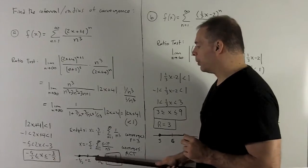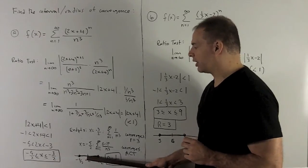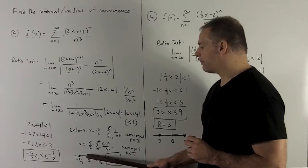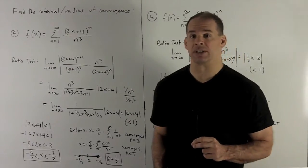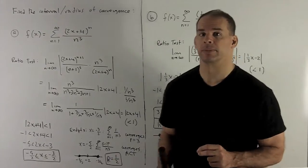Okay, or you just plot the endpoints and then the center is definitely going to be the center. Anyway, distance from minus 2 to minus 3 halves is going to be 1 half. So that's going to be my radius of convergence.